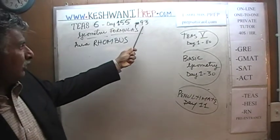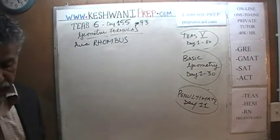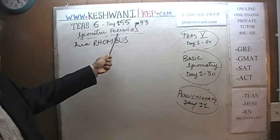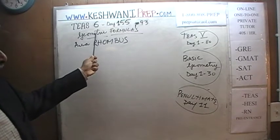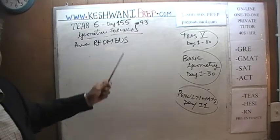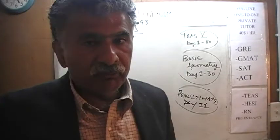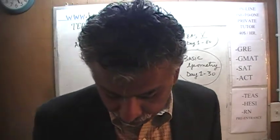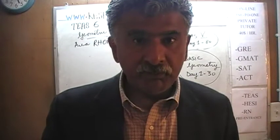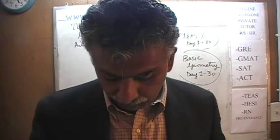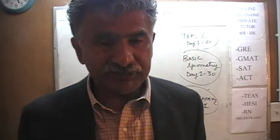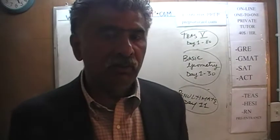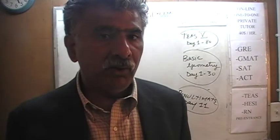We are on page 93. On page 93 you will see a list of basic geometric formulas — basic elementary geometric formulas, rudimentary formulas in geometry. You will see a list of them on page 93. And on that list, the very last entry that you see there is what we are going to talk about right now: the area of a rhombus.